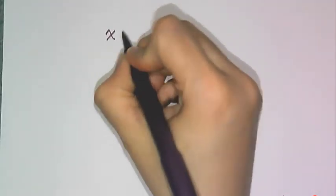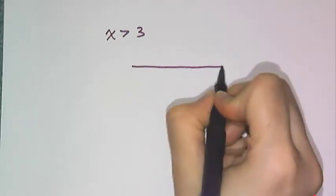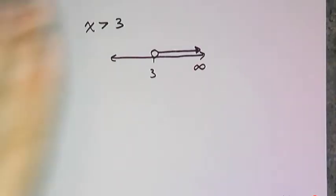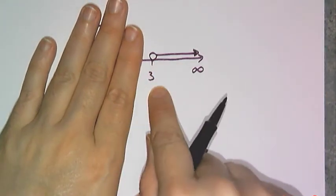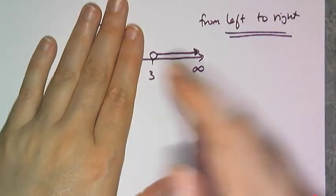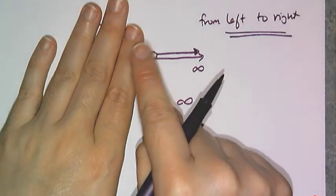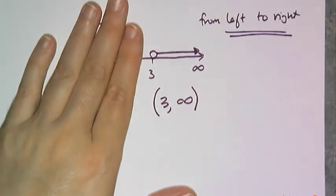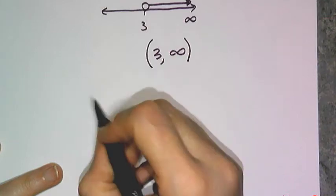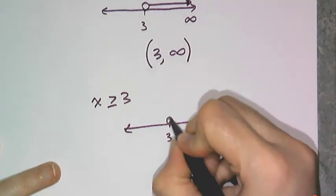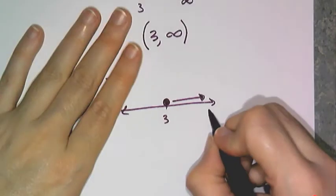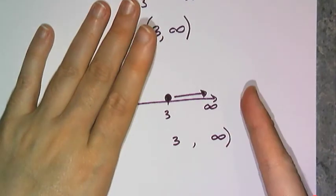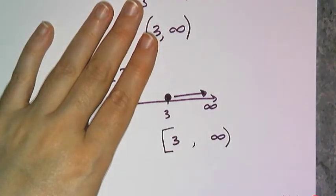For x is greater than 3 on the number line, I have a 3 with an open dot going towards positive infinity. Reading from left to right, the interval starts at 3 and goes towards infinity. I don't want the 3, so I need the exclusive or open endpoint — a parenthesis. And infinities are always open, so I always put parentheses for infinities. The difference between that and greater than or equal to 3 is the type of dot: the filled-in, inclusive one. My interval goes from 3 to infinity, infinities always get parentheses, but I want the 3, so I use a bracket.